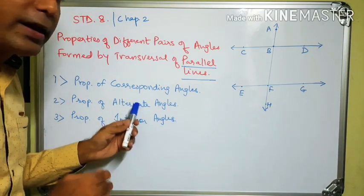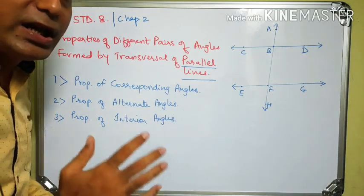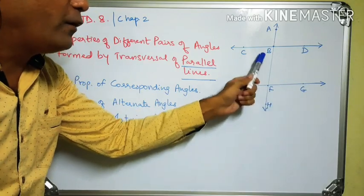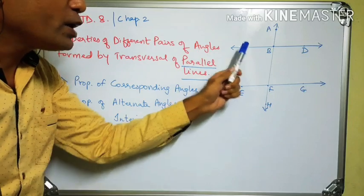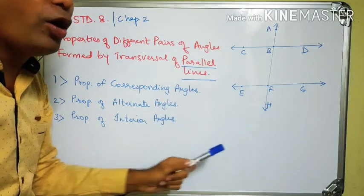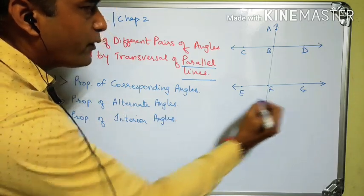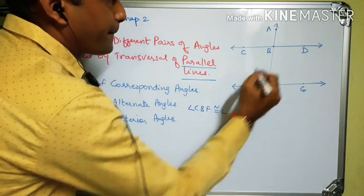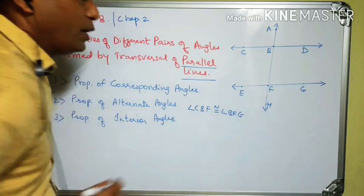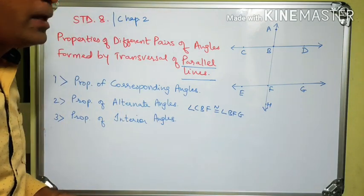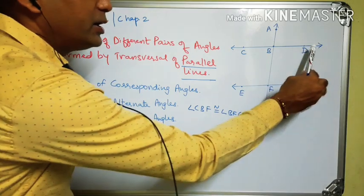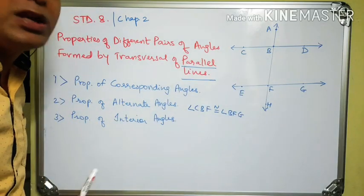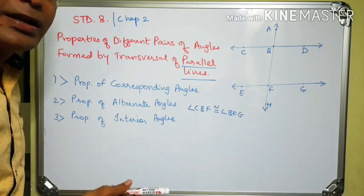Just as corresponding angles are congruent, alternate angles are also congruent. For interior alternate angles: angle CBF and angle BFG form one pair — the Z-letter shape is formed — so this pair is congruent. Angle CBF is congruent to angle BFG. The other pair of interior alternate angles is angle DBF and angle BFG, which is also congruent.